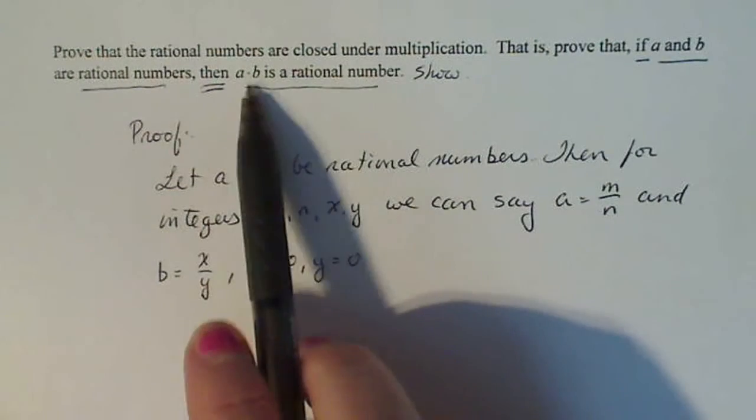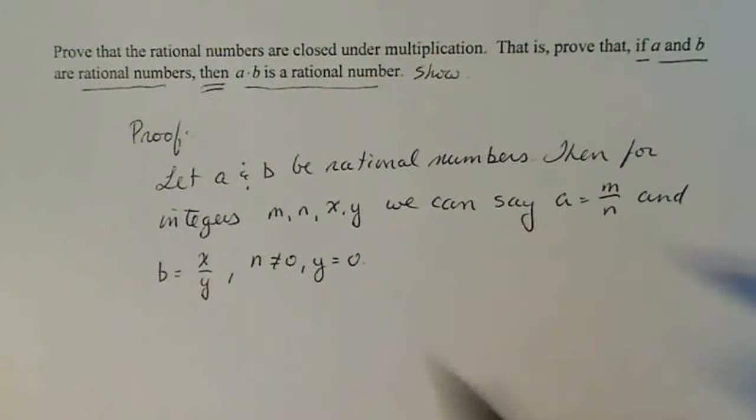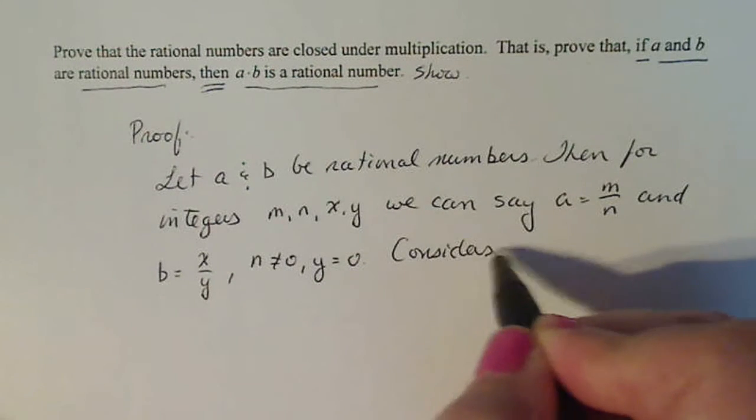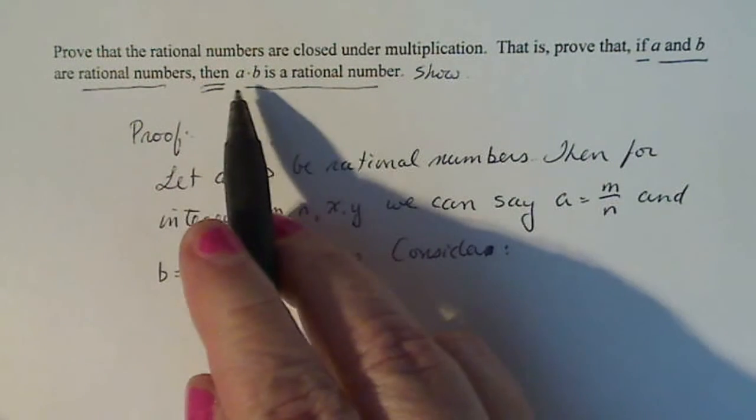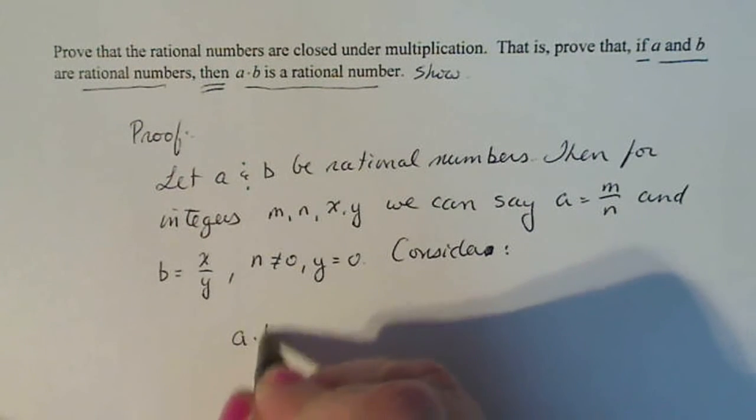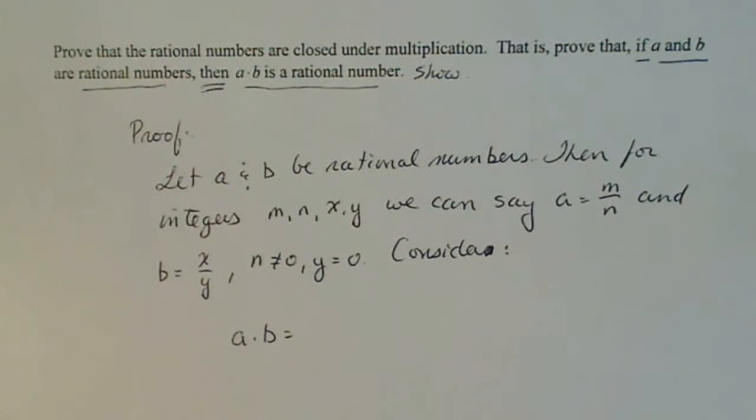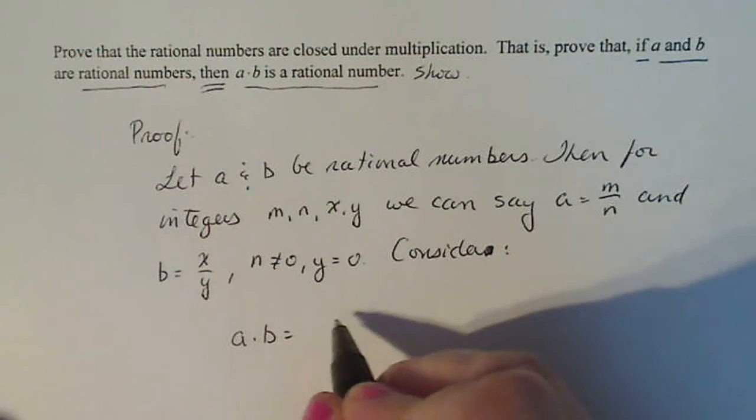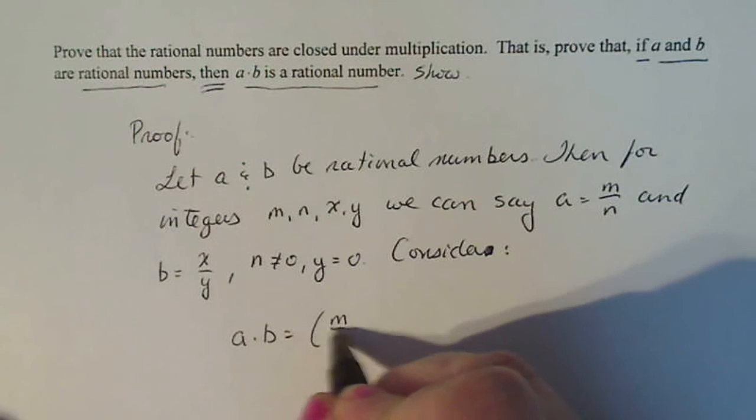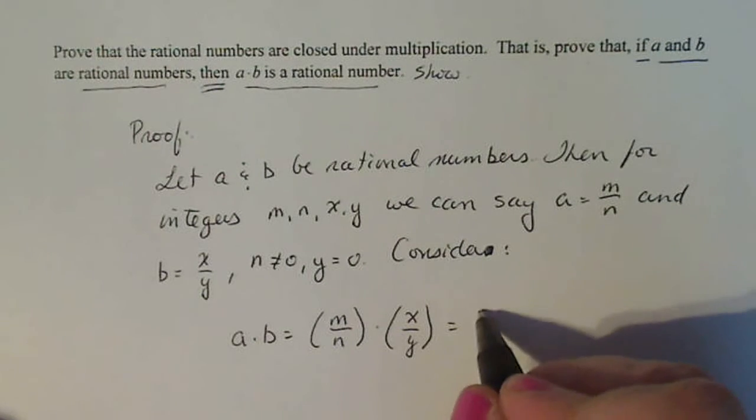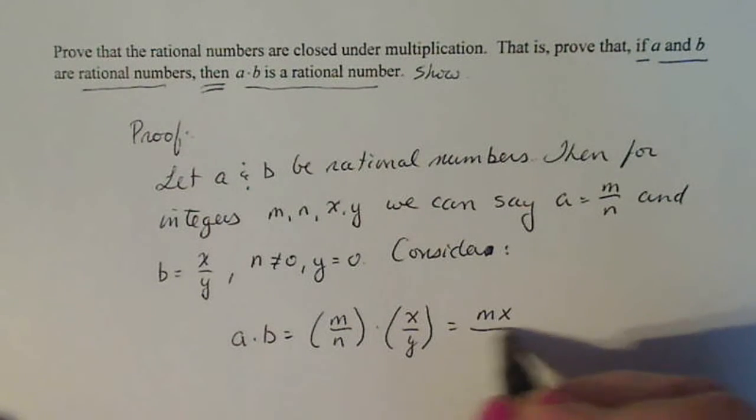So now we're going to try to prove that A times B is a rational number. Let's consider what we're trying to prove. Think about A times B. If I was going to do A times B and I know that A is M over N and B is X over Y, that's M over N times X over Y.